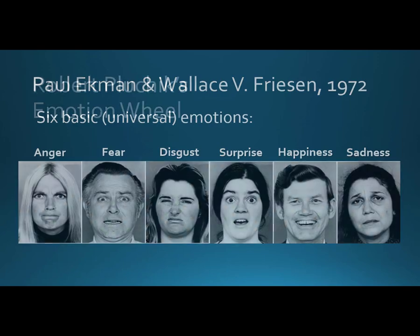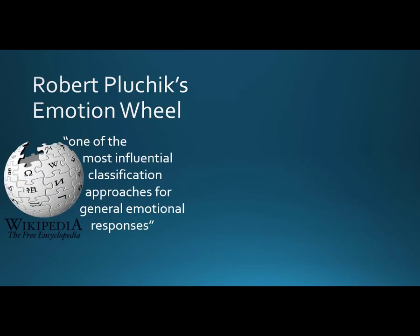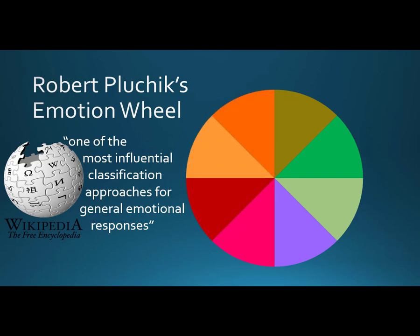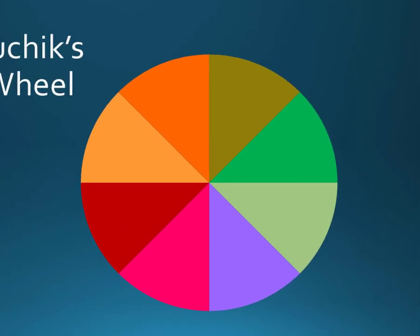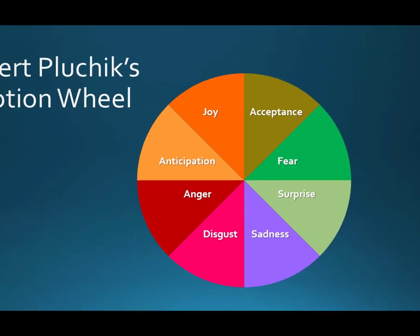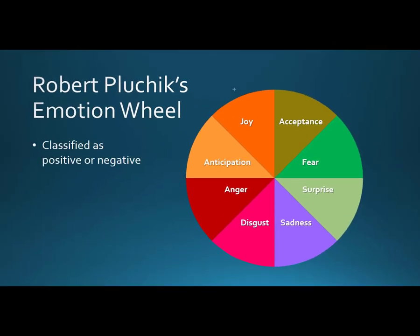Dr. Robert Plutchik, who Wikipedia credits as the developer of one of the most influential classification approaches for general emotional responses, created the Emotion Wheel, listing eight basic emotions. You can think of these emotions as four pairs of opposites—joy and sadness, acceptance and disgust, fear and anger, and surprise and anticipation. He also classified them as positive—joy, acceptance, anticipation, and surprise—or negative—anger, fear, disgust, and sadness.